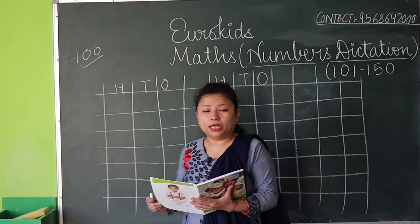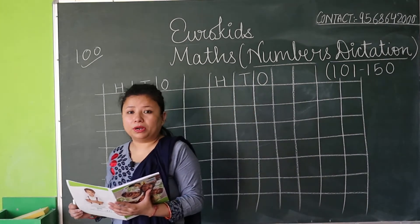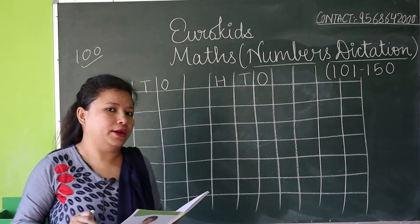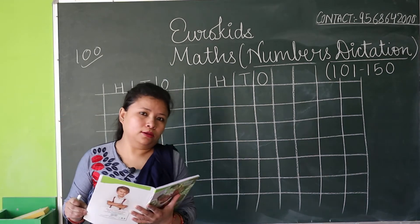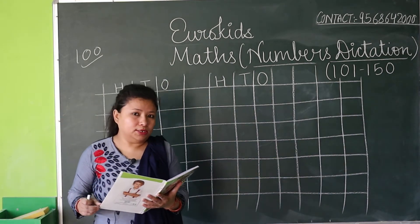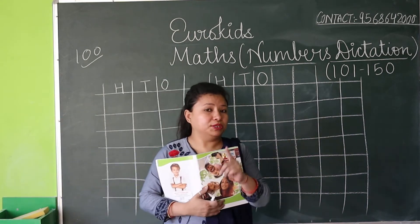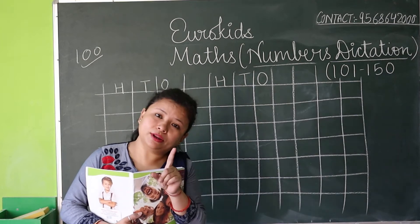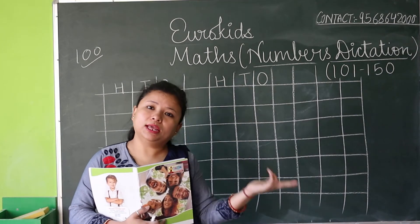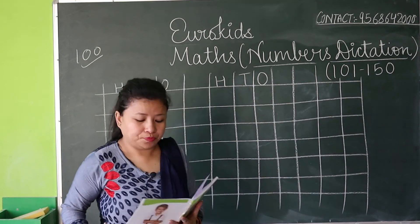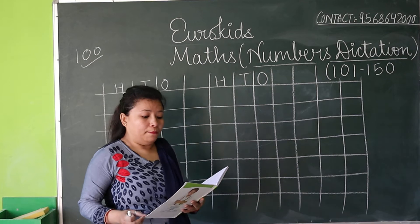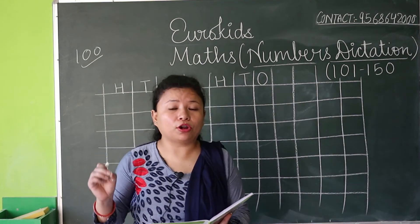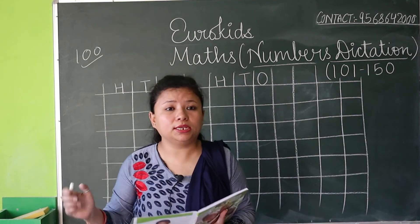Ma'am will not write all the numbers on the board — you have to write on your own. 111: hundred means one, and 11 means one-one. Okay, my next number is 143.